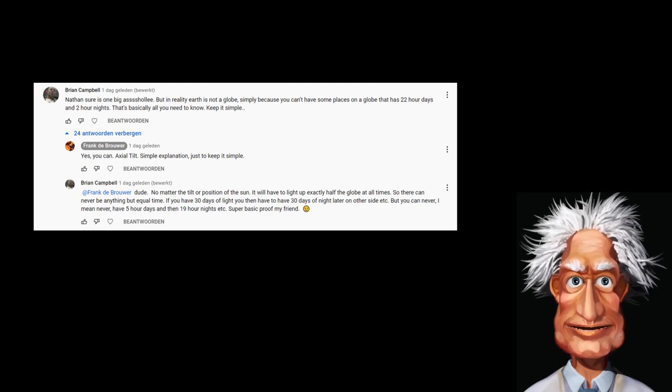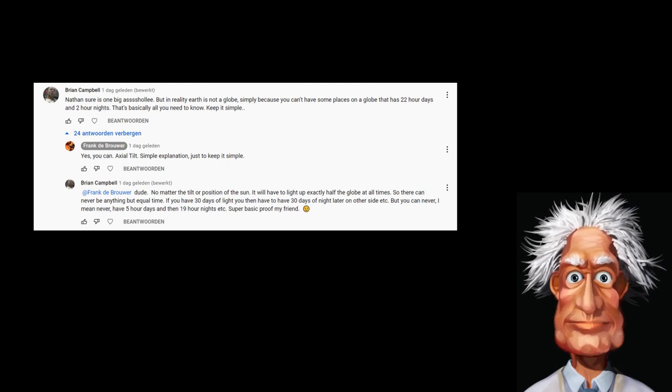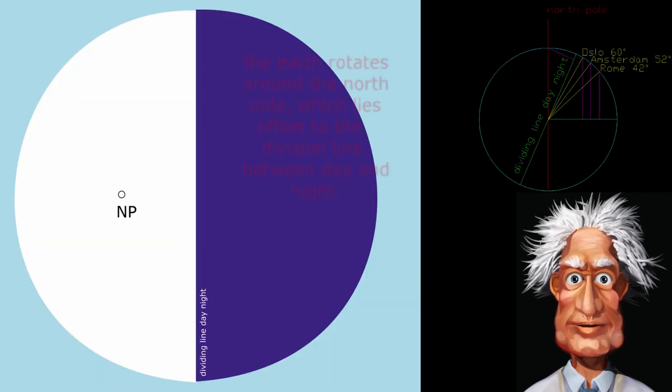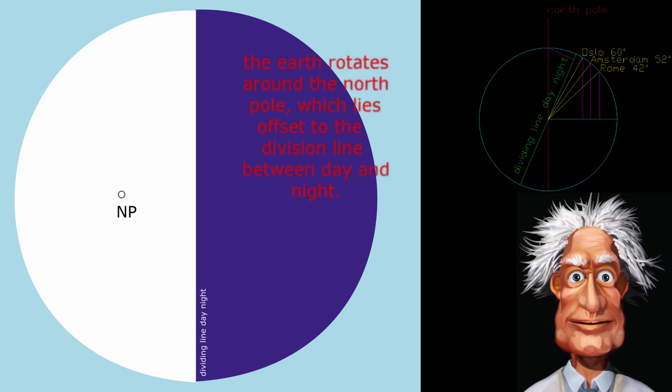He agrees that a 24 hour daytime on the North Pole is possible but he thinks that there is no other division possible between daytime and nighttime. I made this scheme in order to show him that it is entirely possible.